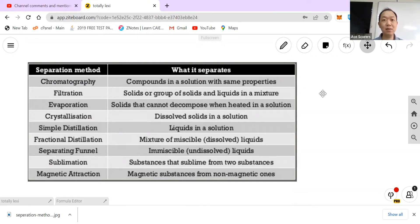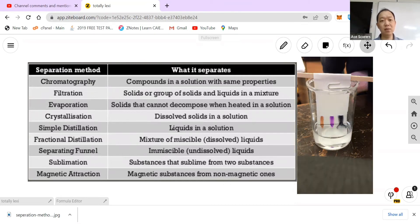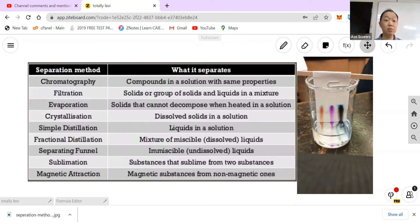So here summarizes everything. First we have chromatography, so what it does is it separates compounds in a solution with the same properties. So most of the time it's being used to separate dyes or colors. Next, filtration: solids or groups of solids and liquids in the mixture.